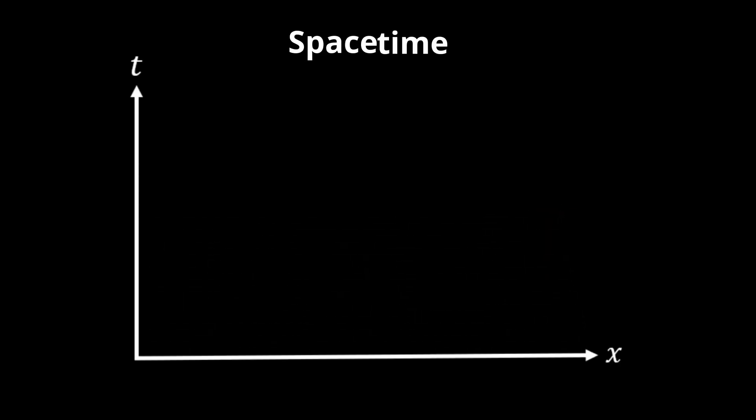In spacetime, however, we have the additional dimension of time. The path is now straight only when the movement is constant, and it bends only when the movement changes.